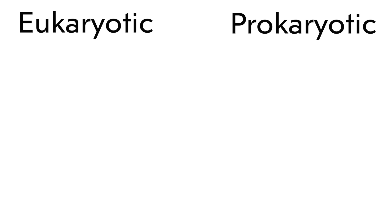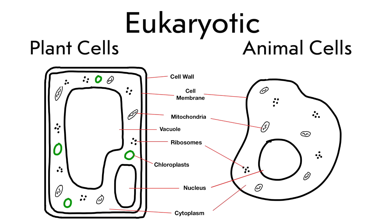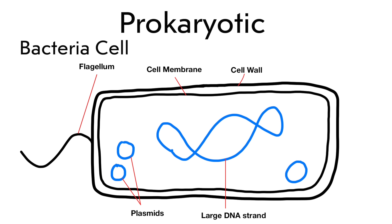There are two main types of cells: eukaryotic cells and prokaryotic cells. Eukaryotic cells consist of plant cells and animal cells, and here is what they look like with all the labels that you need. I would recommend you look into what each of these organelles do, and on the prokaryotic side we have a bacterial cell which looks exactly like this.